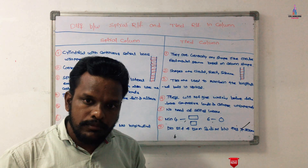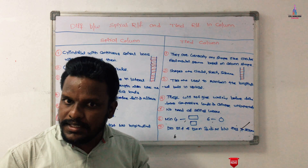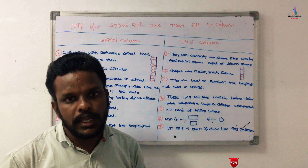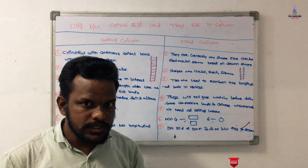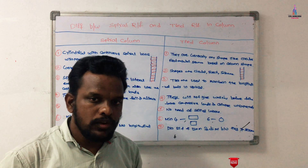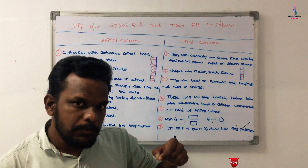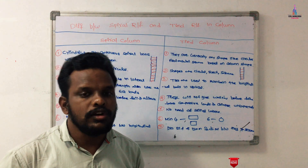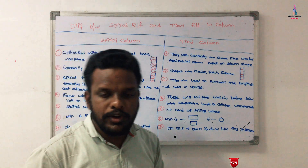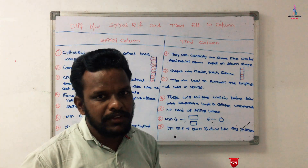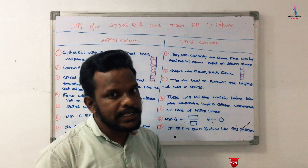The column takes compressive loads, also called axial loads. Due to the presence of the compressive loading condition, the load is directly transferred to the center point of the particular column.